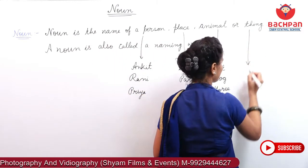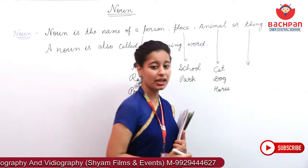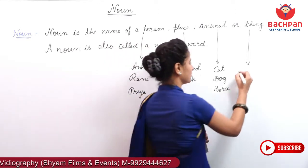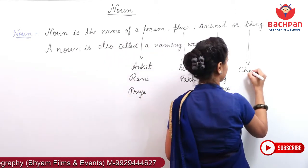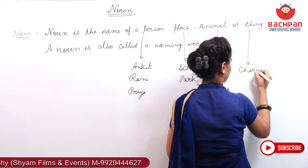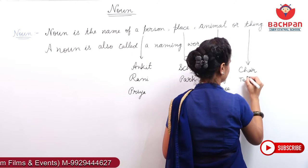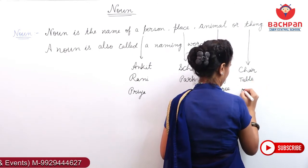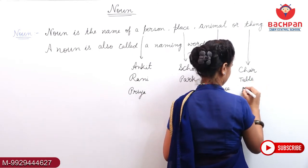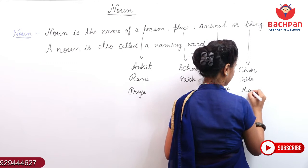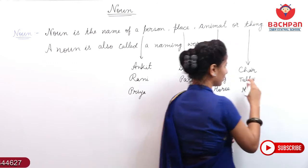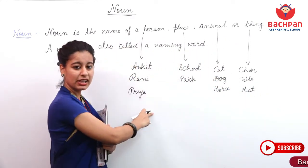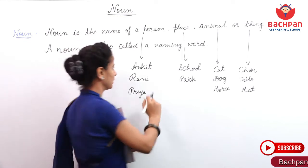Things. Things mein kya kya hote hai? Aap kya kya dekh rahe ho? Chair. Table. And mat. Ye sab kya hai? Thing. Toh apan in sab ko kya bol sakti hai? Noun bol sakti hai.